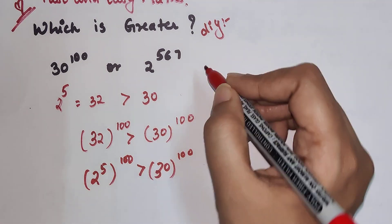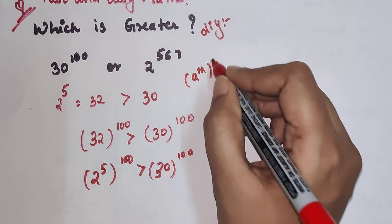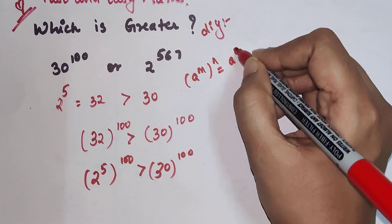Now we have a raised to m the whole raised to n, that can be written as a raised to m times n.